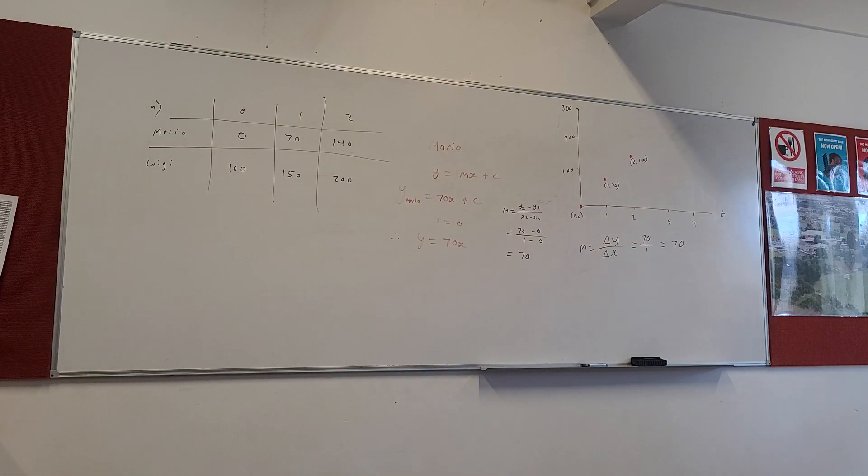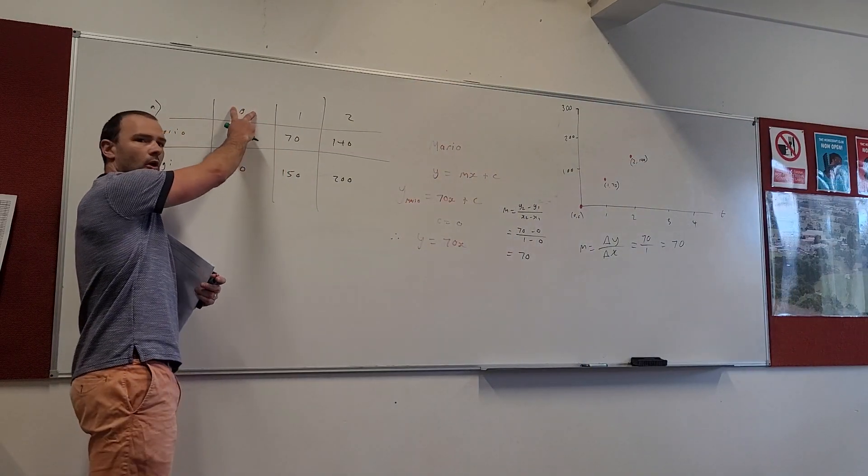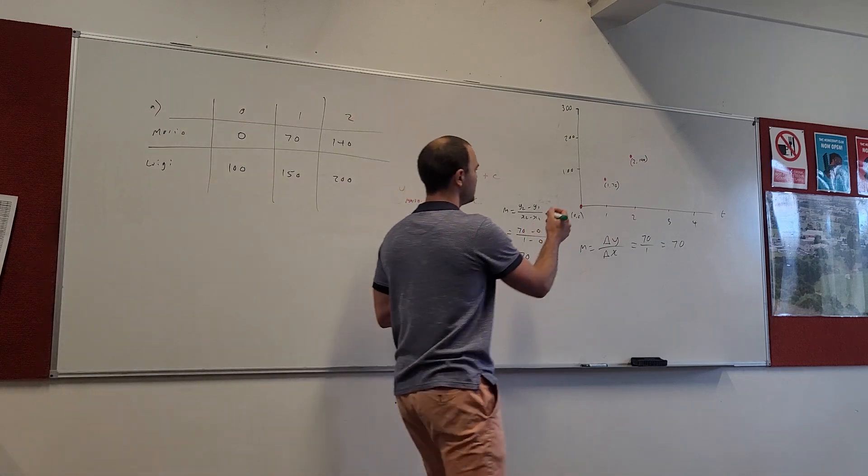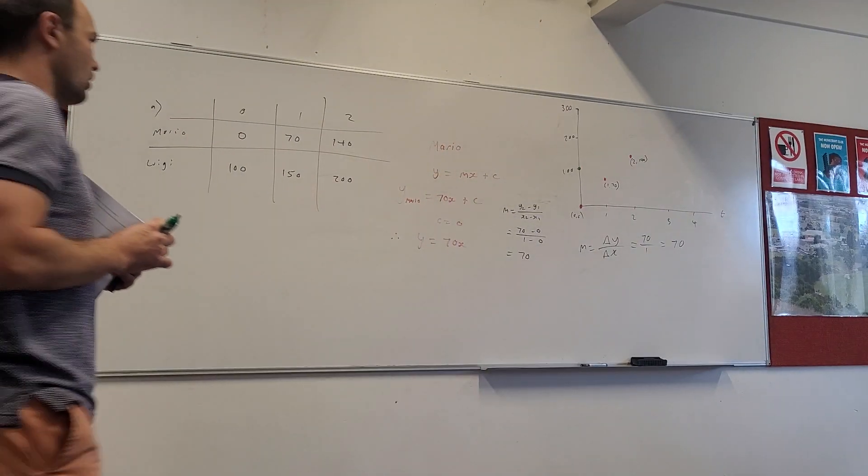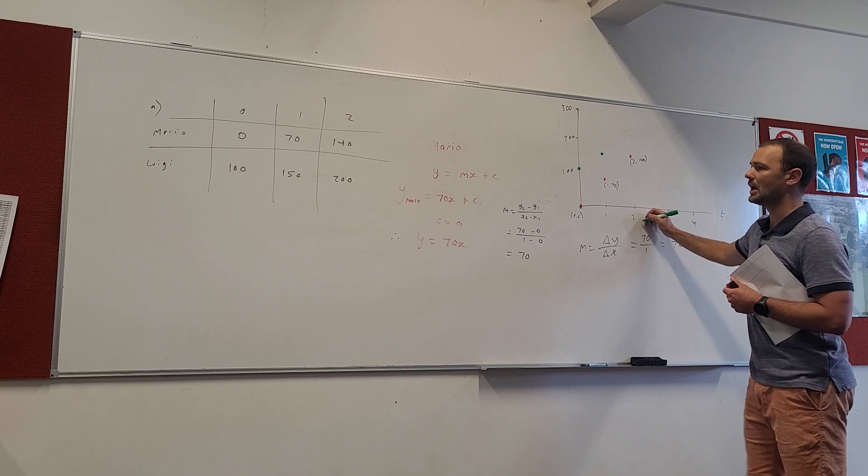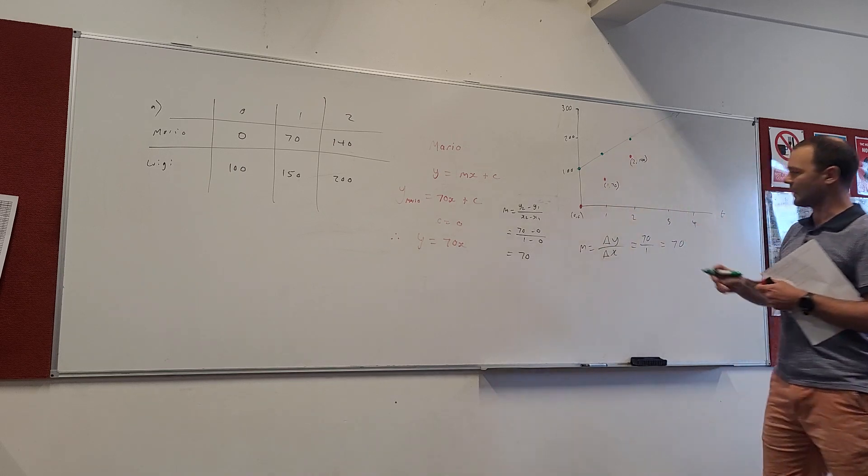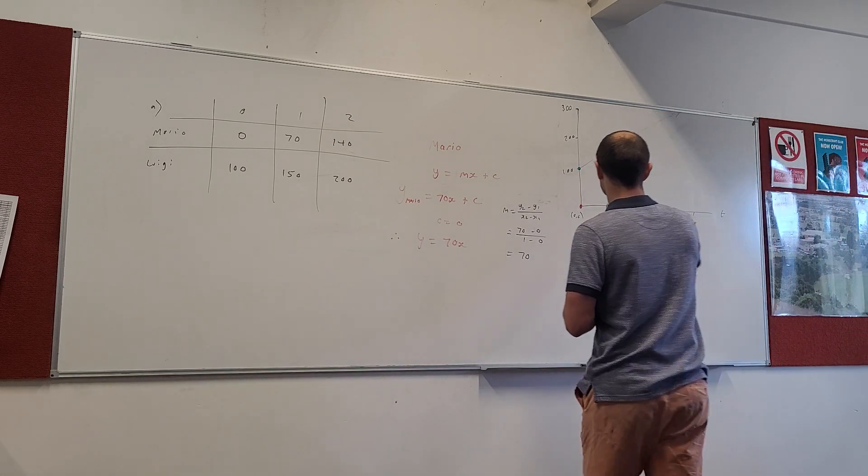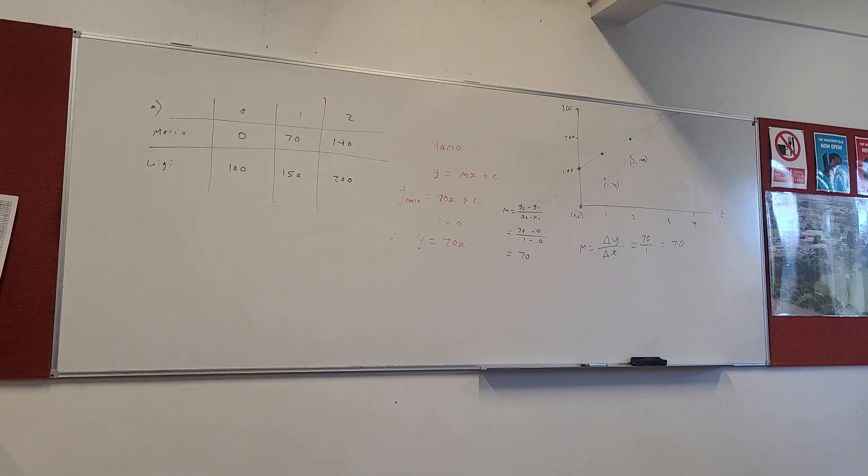So, I've got my green marker over here. Luigi. So, first let's plot the points. We've got when time is 0, y is 100. So, here's our first point for Luigi. 0, 100. Let's plot the rest of the points. We've got 1 and 150. We've got 2 and 200. Alright. And I'm going to sketch them. I'm going to sketch them because they're going like that. And the red one's going like this. Alright, they keep on going.